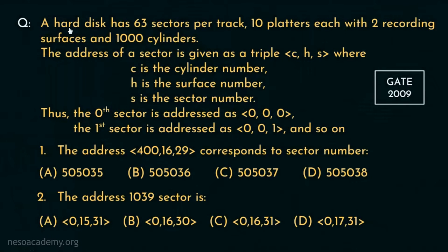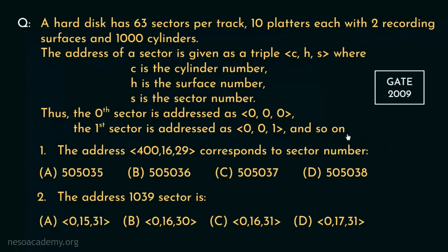Consider this question: a Hard Disk has 63 sectors per track, 10 platters each with 2 recording surfaces, and 1000 cylinders. The address of a sector is given as a triple C-H-S, where C is the cylinder number, H is the surface number, and S is the sector number. Thus, the 0th sector is addressed as 0,0,0 and the 1st sector is addressed as 0,0,1 and so on. There are 2 questions pertaining to this concept, and we will solve them one by one.